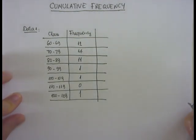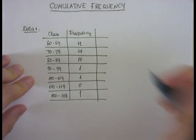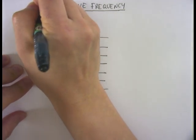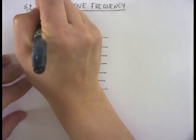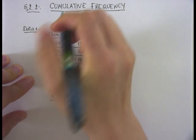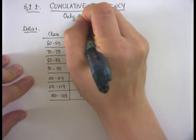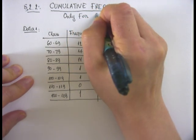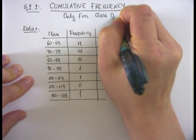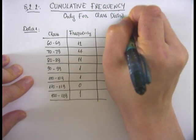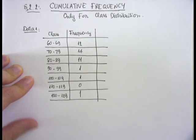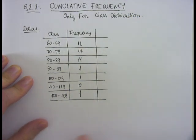Okay, so the last type of frequency being discussed in section 2.2 is cumulative frequency. Notice cumulative frequency is only for class distribution.